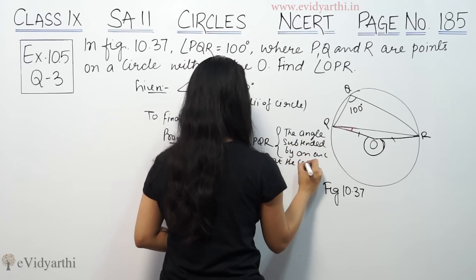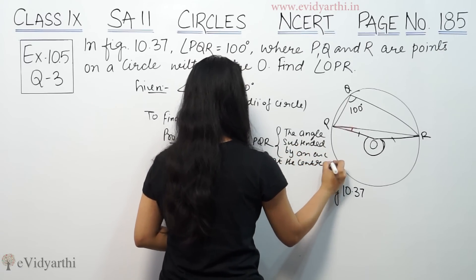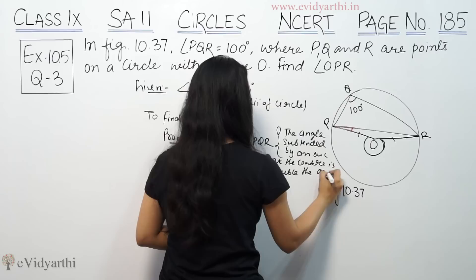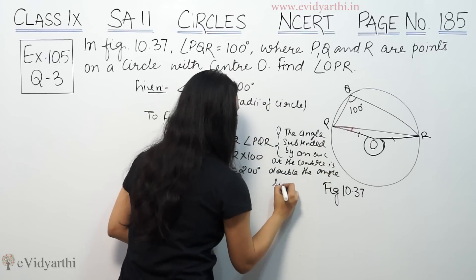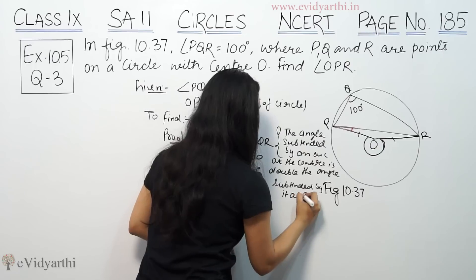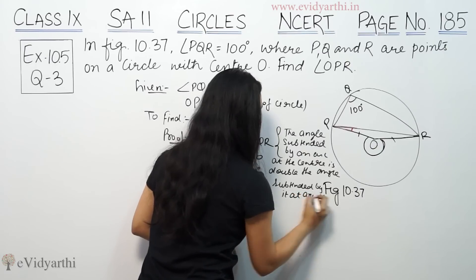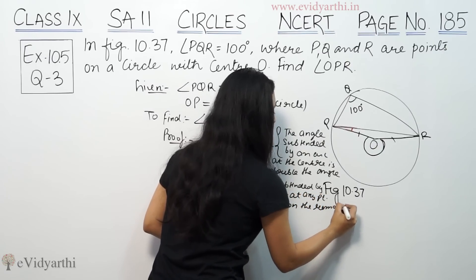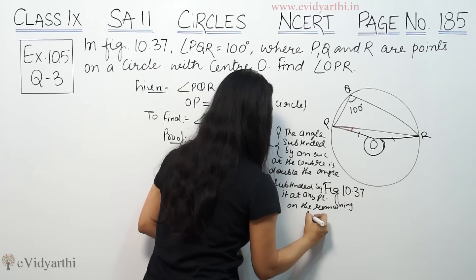is double the angle subtended by it at any point on the remaining part of the circle.